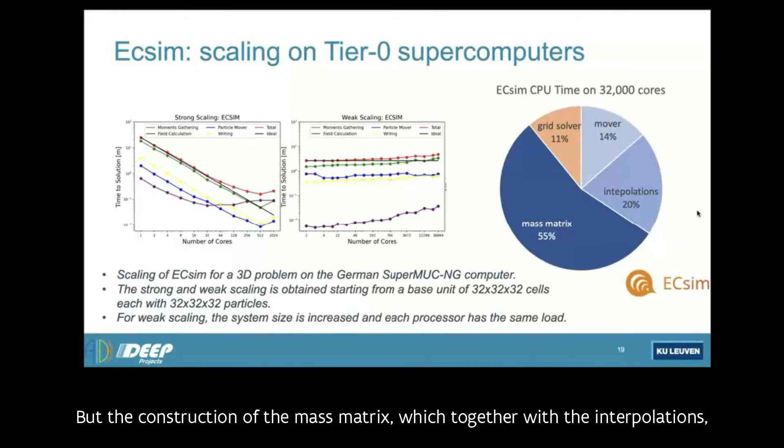But the construction of the mass matrix, which together with the interpolations, starts to cost more and more as you increase the processor to, in this case, 36,000. At that point, you need to start worrying about making that better. The field solver is also not scaling perfectly as here at the bottom one, but it is the most relatively small component still. But of course, if you were going to 300,000 or 3 million processors, then the field solver would start to be a problem and improvements need to be done.